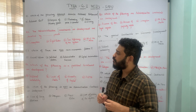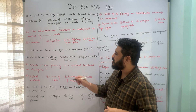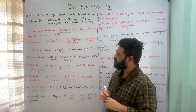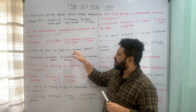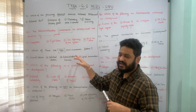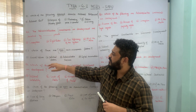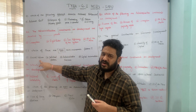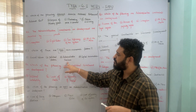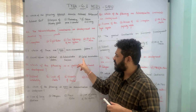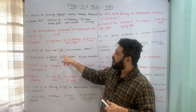The next question asks: which of the following are NOT non-economic factors? In other words, we are looking for the economic factor among the options. Social values is a non-economic factor, political factors is a non-economic factor, and administrative factors is also a non-economic factor.